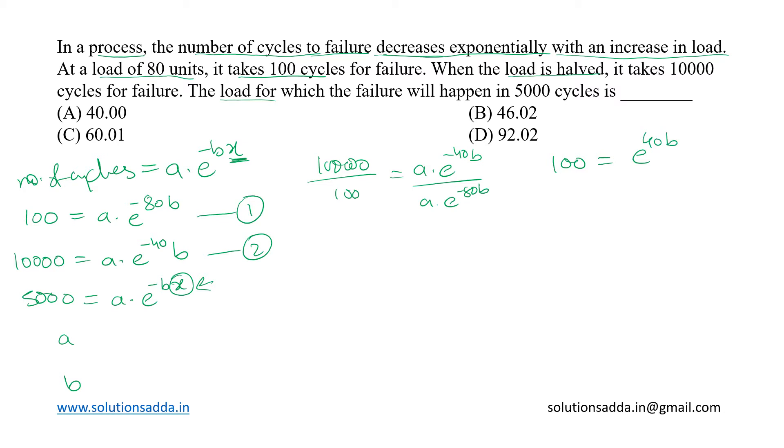From here we can take ln on both sides, which is log to the base e. That will give us ln 100 equal to 40b, since ln e will be 1. So from here we get the value of b as ln 100 upon 40.